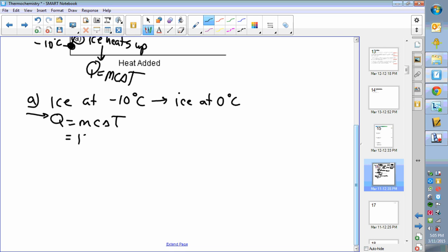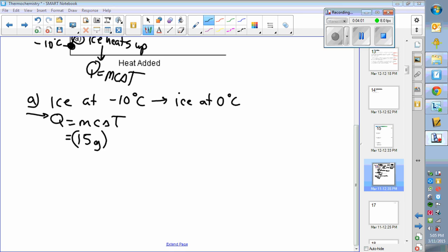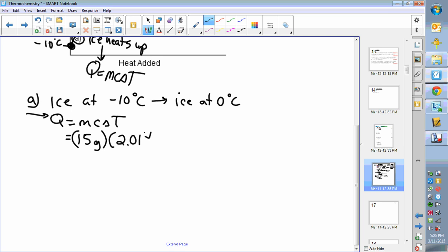Our mass was 15 grams, the heat capacity of ice is 2.01 joules per gram degree celsius, and our temperature change goes from a final of zero minus an initial of negative 10, so that's a 10 degree change.